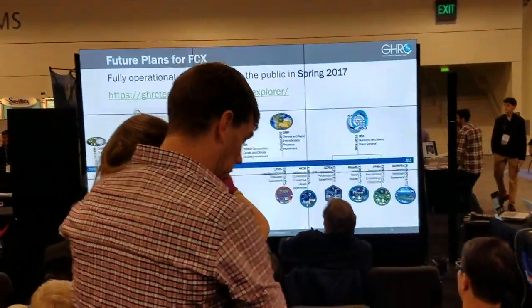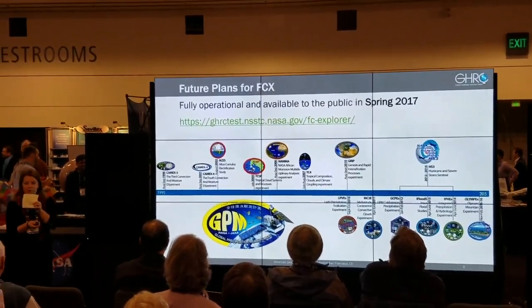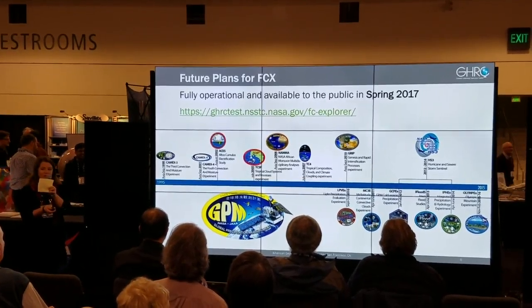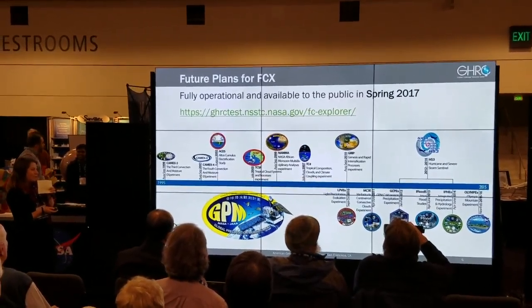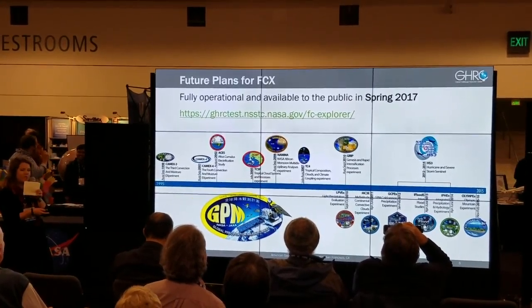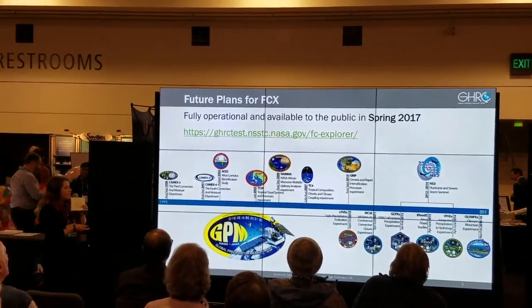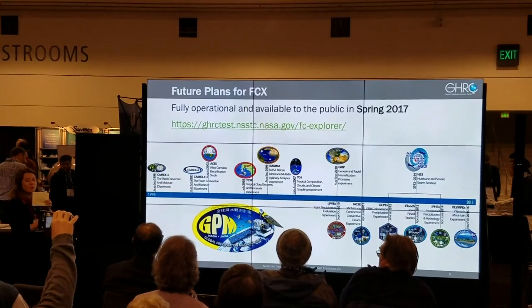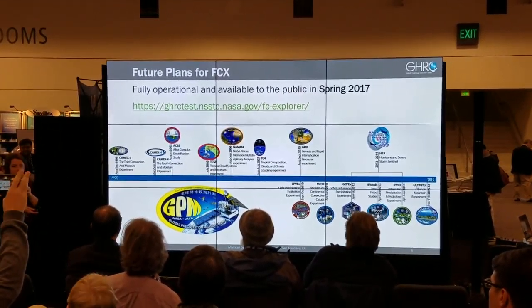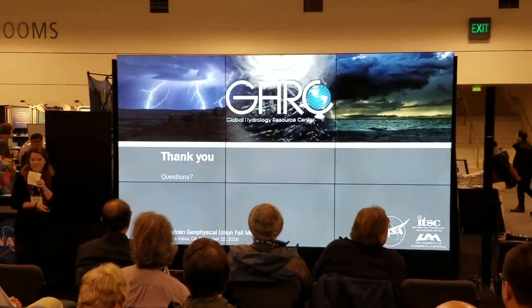In conclusion, the field hurricane explorer tool will become fully operational to the public in spring of 2017. We will be working to incorporate our other field campaign data holdings — most recently, our GPM ground validation experiments, which we hope to incorporate as well. Finally, we want to work to make this platform more usable for our data users. If you're interested in exploring this tool, feel free to follow the links and ask any questions or talk to us after.